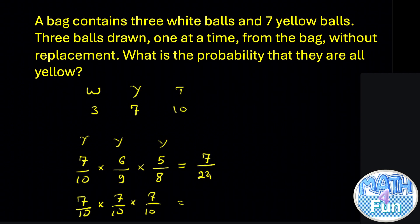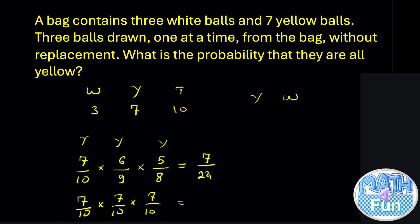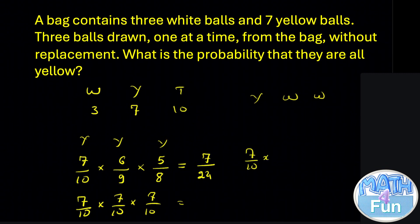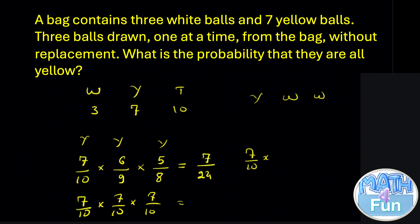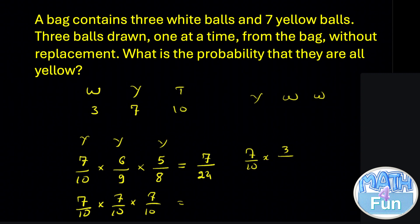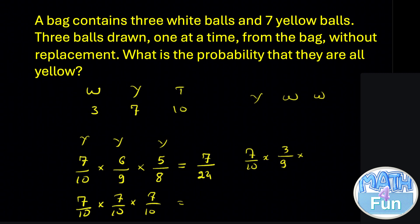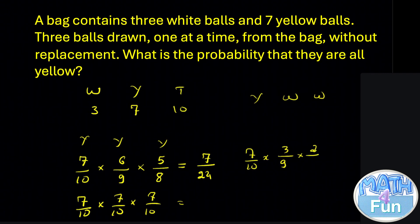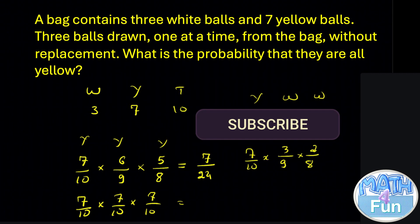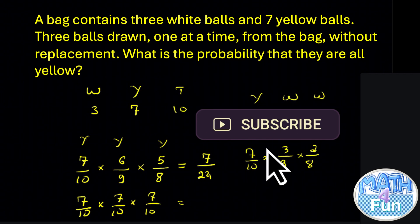But that's not our question here. What if they want the first one to be yellow, the second to be white, and the third to be white? The first is yellow: 7 out of 10. The second to be white: white balls are still 3, but total changed to 9, so 3 over 9. The third to be white: already took one white, so 2 over 8. This makes the question more clear. For more on probability, go to the channel and look at the probability videos.